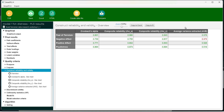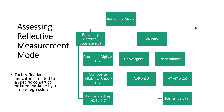Then we have the AVE — the average variance extracted. When checking the reflective model, first we need to see reliability or internal consistency. The benchmark values: Cronbach's alpha should be greater than 0.7, composite reliability should be greater than 0.7, and factor loadings should be preferably greater than 0.7, but greater than 0.4 are also acceptable.